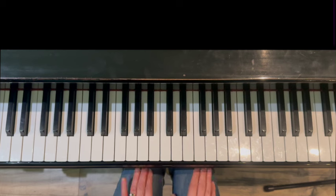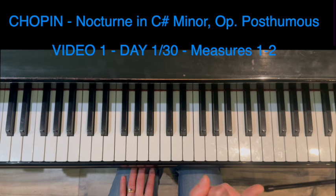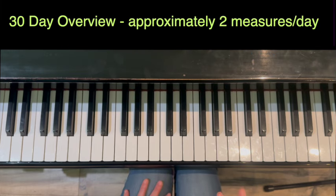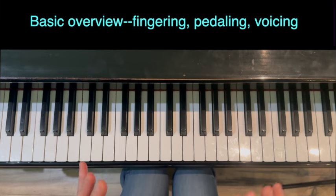Hello and thank you for watching. This is Jennifer Bowman with Olympia Piano, and this is going to be video one in a 30-day series on Chopin's Nocturne in C Sharp Minor. I'm not going to call this a challenge, I'm going to call it a 30-day overview of this piece. I'm going to give you a basic overview with some fingering, pedaling, and voicing so you can get started on this piece in an accurate fashion.